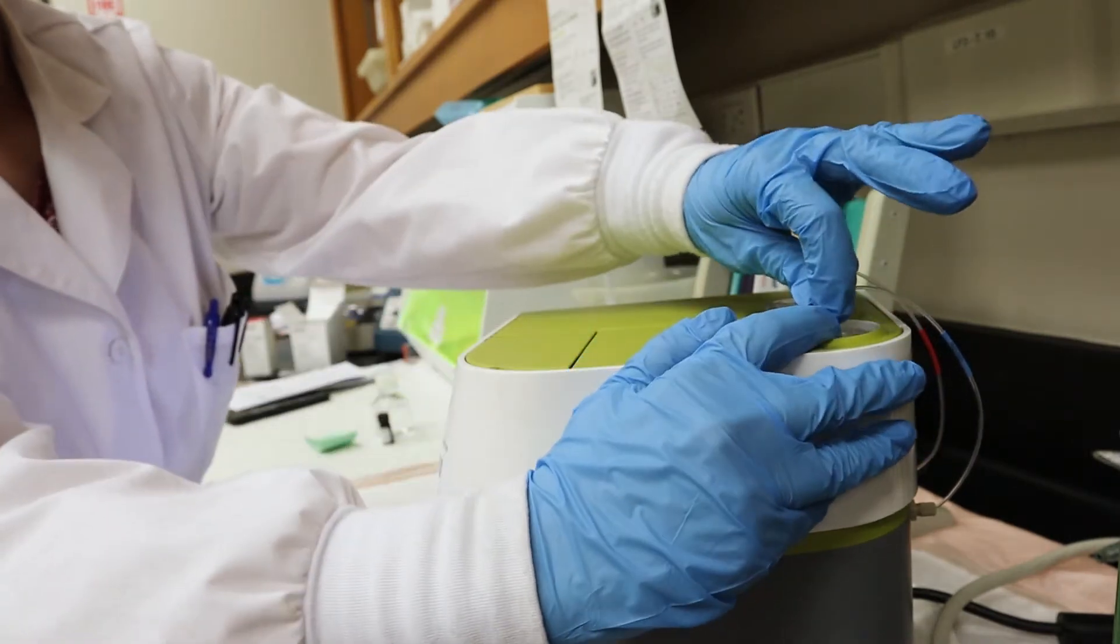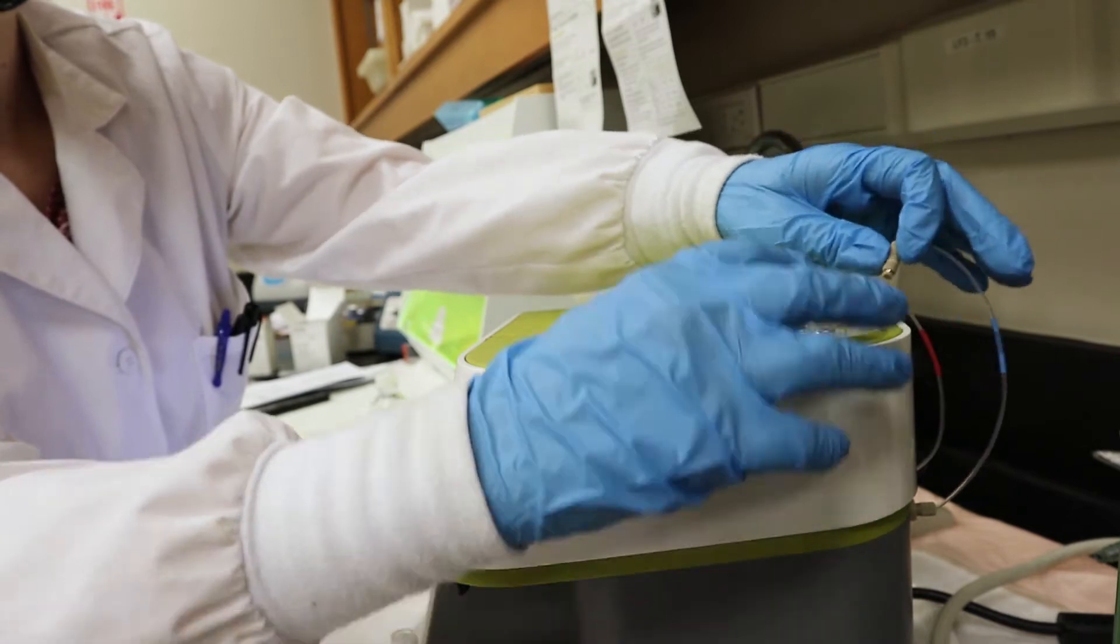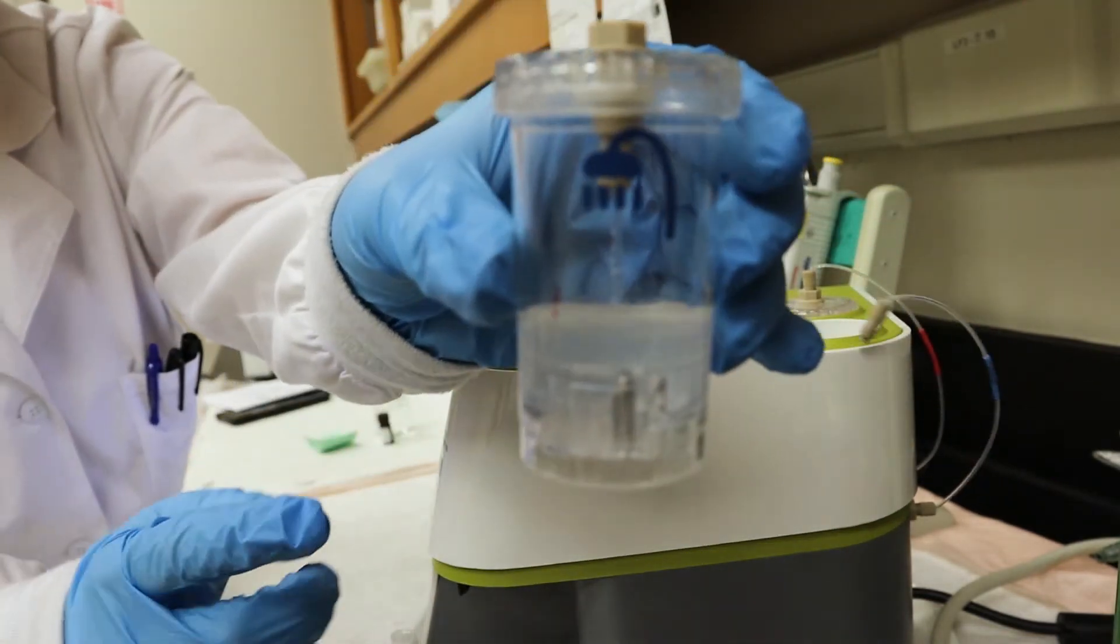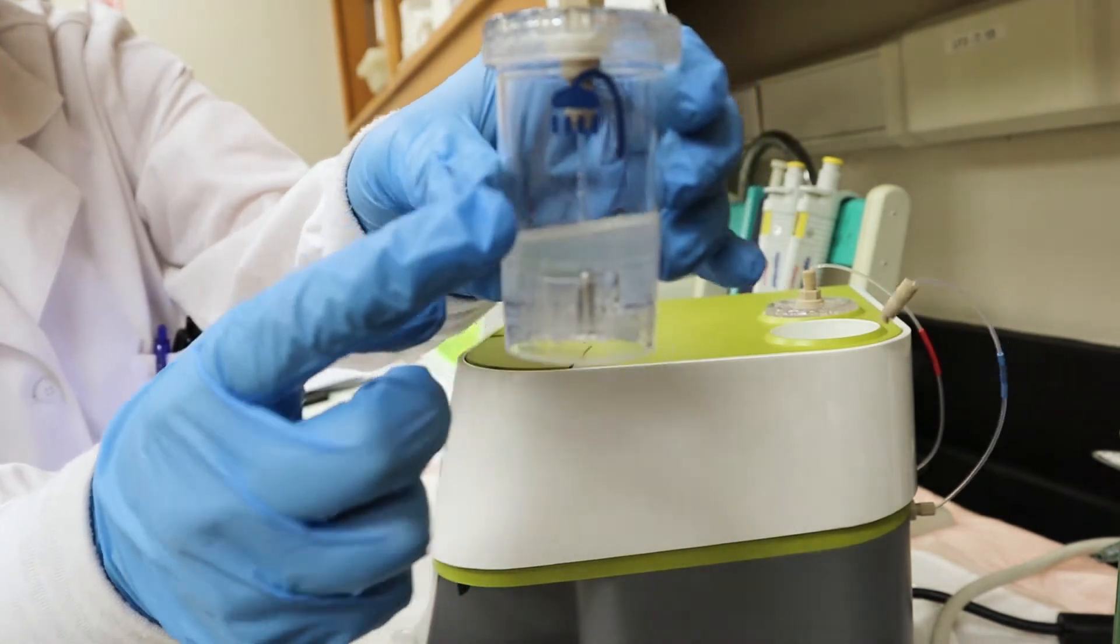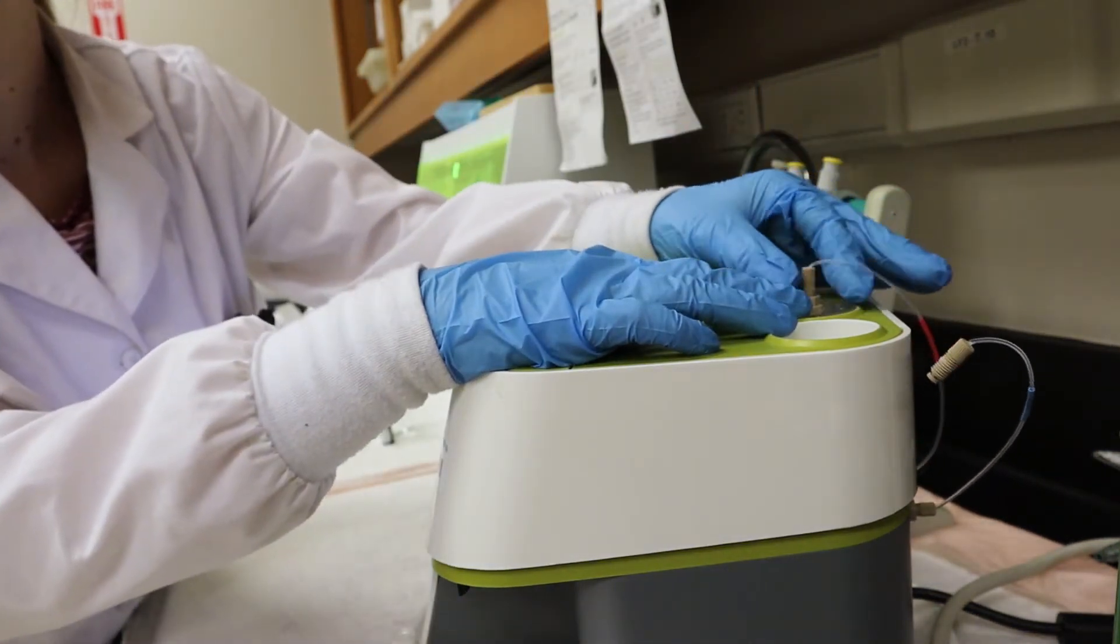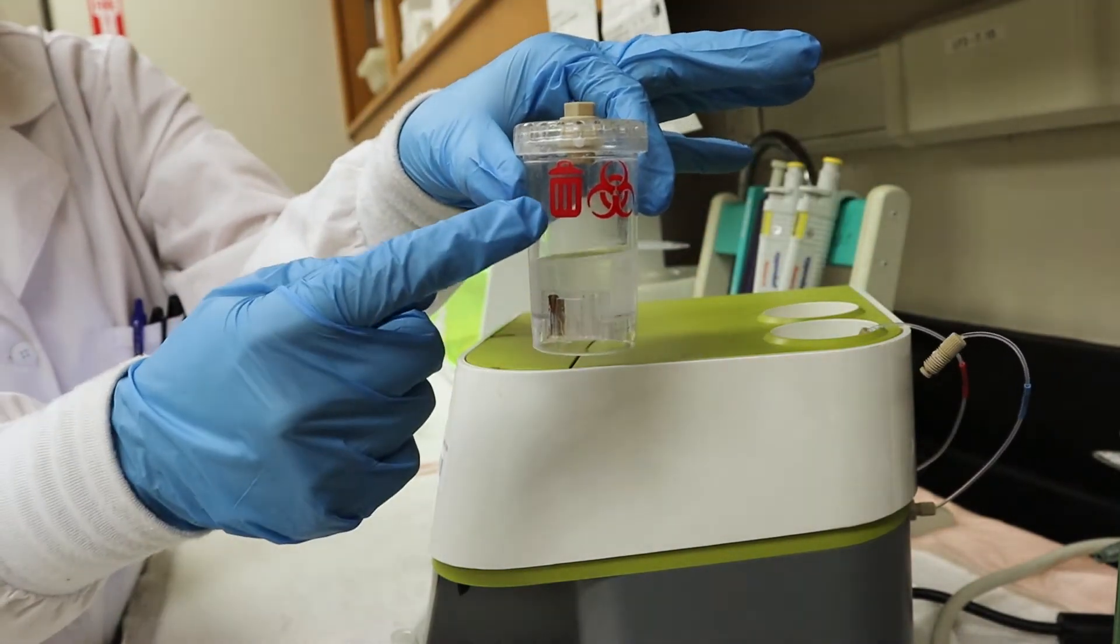To remove the bottles from the unit, unscrew the tubing from the top of each bottle and push down to release. The cleaning bottle has a blue shower icon. The waste bottle has a red trash can and a biohazard logo.